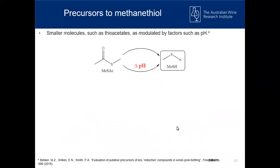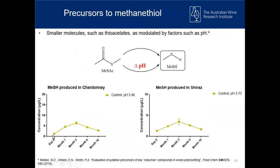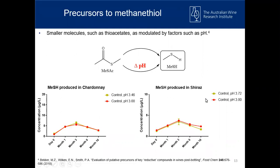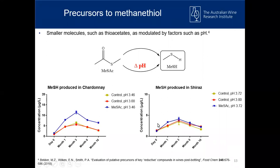Moving on to the second experiment looking at pH effects — in our Chardonnay and Shiraz wines we again saw the natural evolution pattern of methanethiol in the control wines at unadjusted pH. When we dropped the pH to 3.0 in these wines without any precursors, we didn't see a dramatic increase in methanethiol — the traces looked basically the same. So just by lowering the pH of a wine without any precursors, you don't promote methanethiol production.